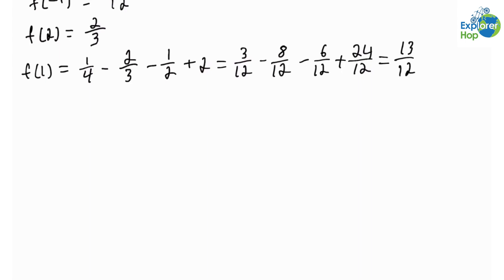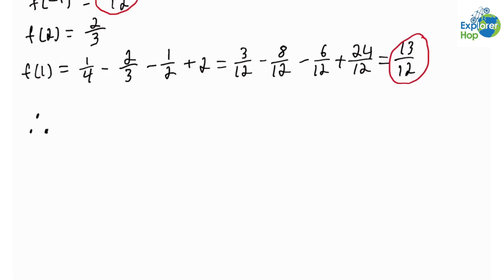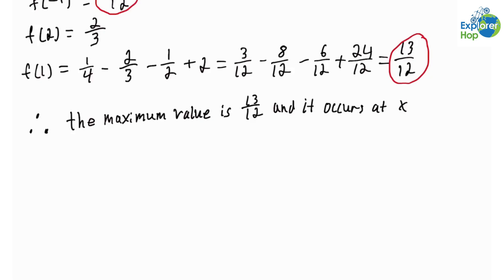Comparing all the values we have obtained, the largest value is 13/12 and the smallest is −19/12. Therefore, the global maximum value is 13/12 and it occurs at x = 1. The global minimum value is −19/12 and it occurs at x = −1.